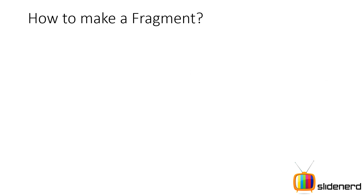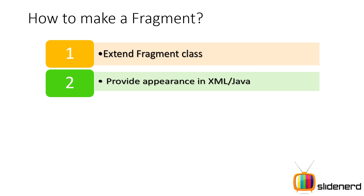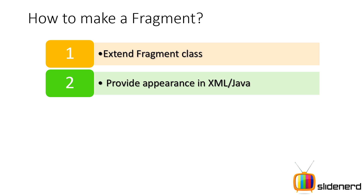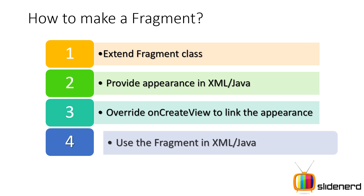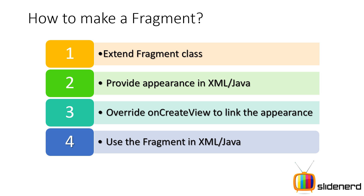What is the process of making a fragment? There are four steps involved. Step one: extend the fragment class. Step two: provide the appearance in XML or Java — this is just like giving a layout to the fragment, which you would do with activities. Remember, each fragment is entitled to have its separate layout, but it's not necessary; you can have a fragment which is not visible to the user and therefore does not require a layout. Step three: write the on create view method to link the appearance.